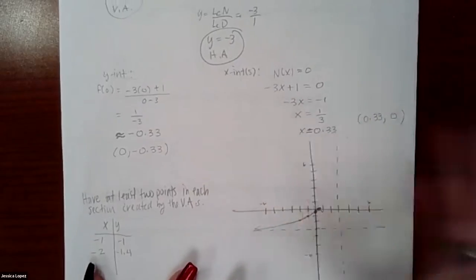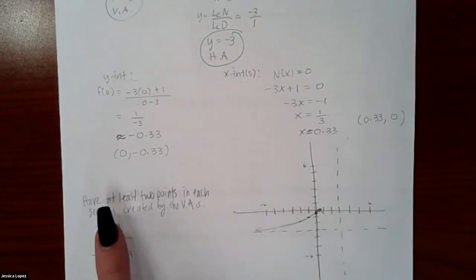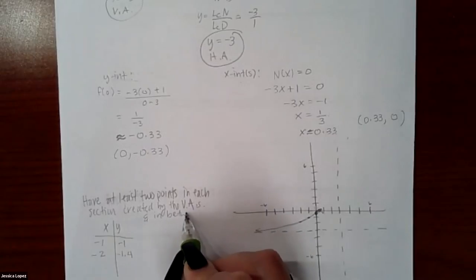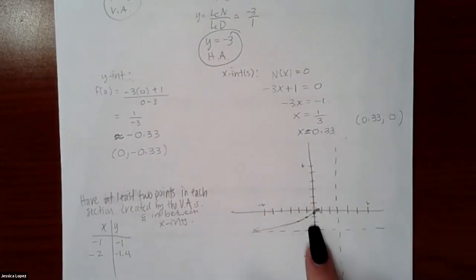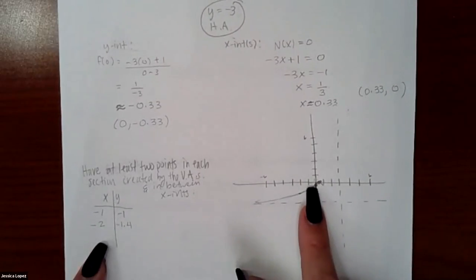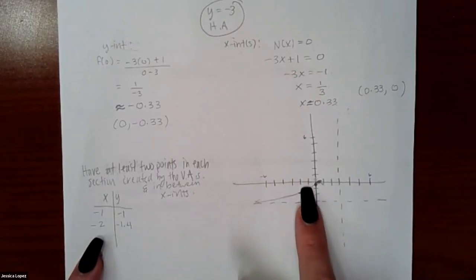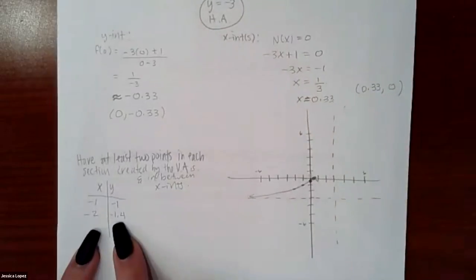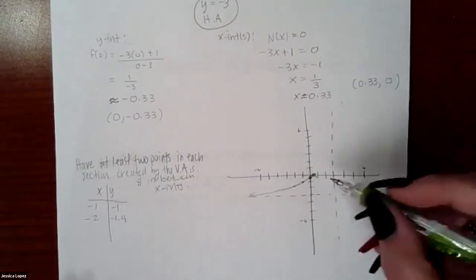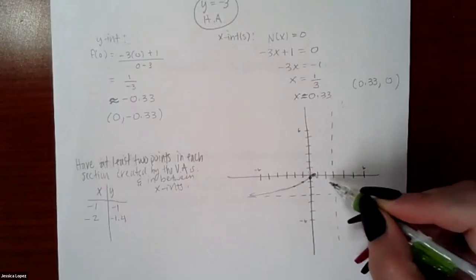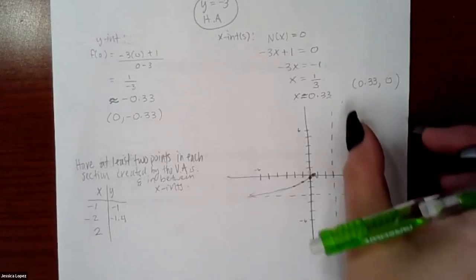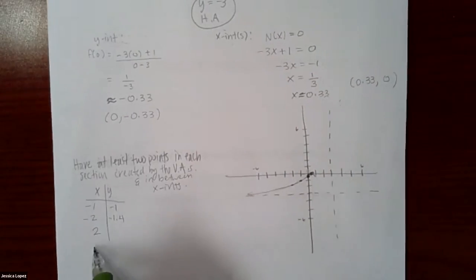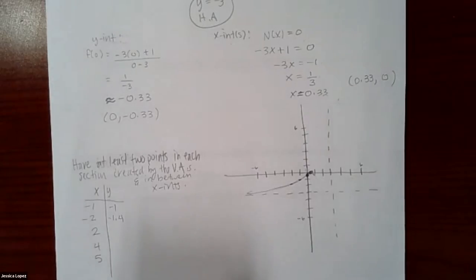According to the steps, I need at least two points in each section created by the vertical asymptotes and in between x-intercepts. I chose negative one and negative two to the left of the x-intercept. I also need to plug in a number between the x-intercept and the vertical asymptote — maybe positive two — and two points to the right of the vertical asymptote, so I'll try four and five.